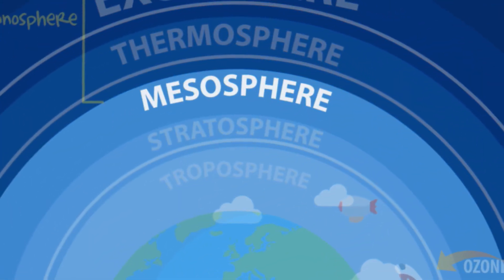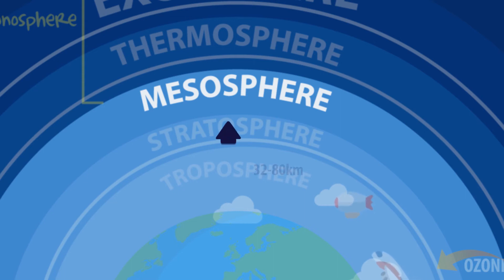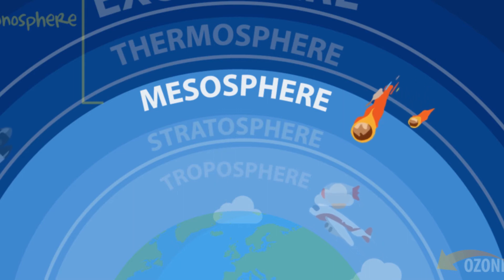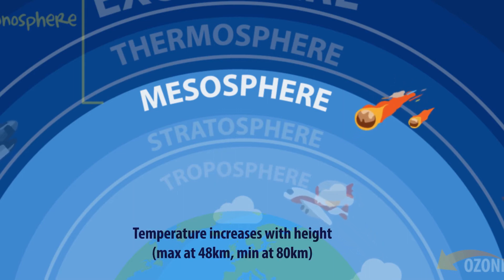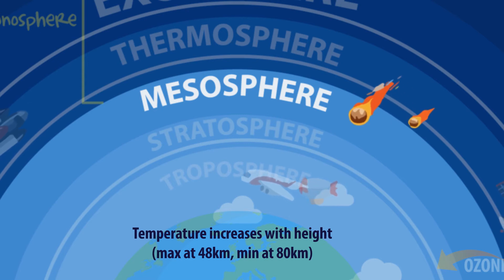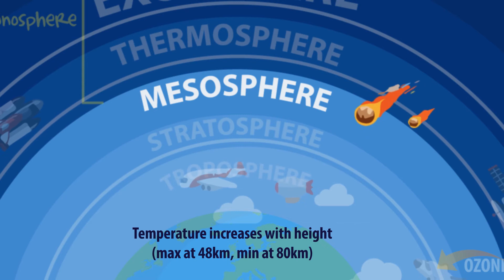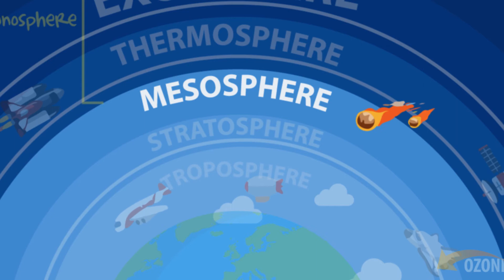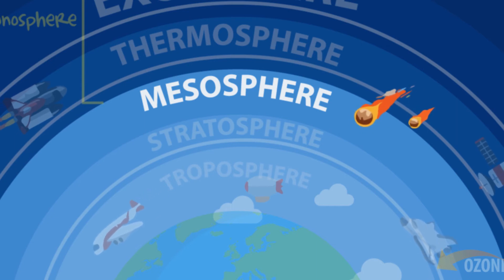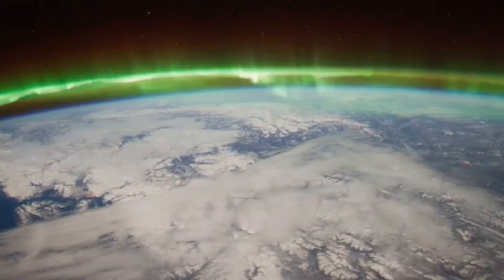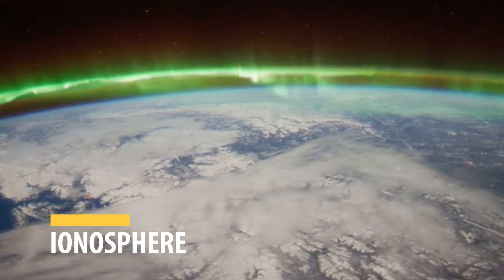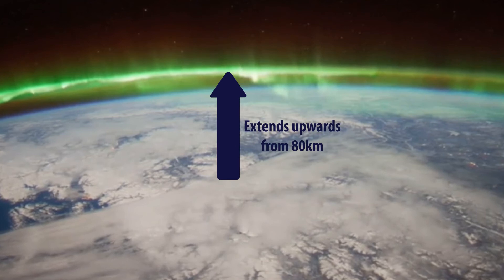Let's go into the mesosphere. It extends from 32 to 80 kilometers above the Earth's surface. Temperature increases with height to a maximum at about 48 kilometers, then decreases to reach the minimum atmospheric value at about 80 kilometers. Ozone is concentrated from 16 to 56 kilometers.